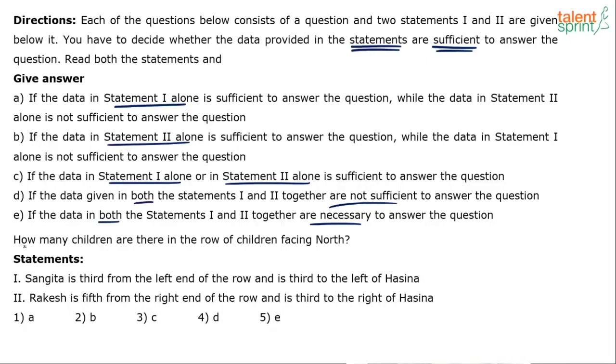First question: how many children are there in the row of children facing north? We have to find out the count — the number of children in a particular row. This belongs to the topic of ranking and ordering. To find out the total number of children in a row, you should know the position of one particular person from both ends — left end as well as right end. The formula is: position from left end plus position from right end minus one.